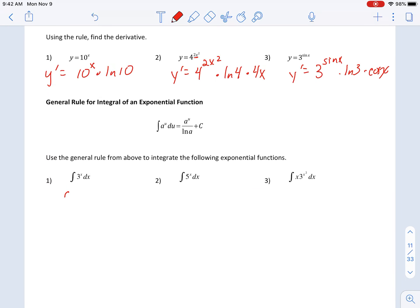So the antiderivative of 3 to the x is still an exponential 3 to the x, but you're going to divide by natural log of 3. Antiderivative of 5 to the x is still 5 to the x, but you'll divide by natural log of 5 plus c.